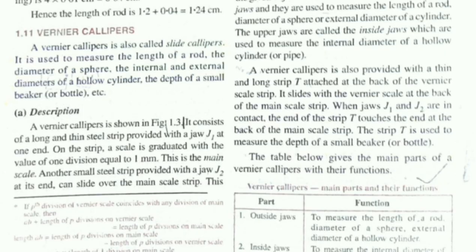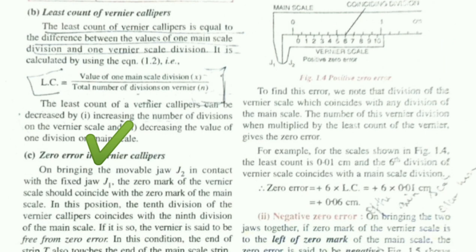So that was the description and reading of the vernier caliper. Now the formula is very important. The least count of a vernier caliper is the value of one main scale division divided by the total number of divisions on the vernier scale. Now imagine the main scale is the normal 15 cm scale that we use.